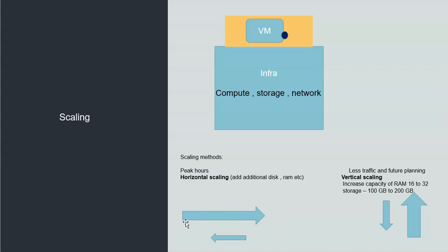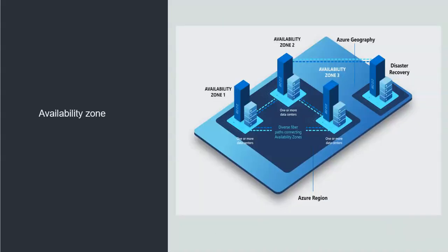Horizontal scaling happens when we don't want to reset or reboot the machine and want to improve performance on the running condition. Vertical scaling is when there are not many users and we plan to improve performance for the future — for example, upgrading from 16 GB RAM to 32 GB or 64 GB. When we increase the RAM and are ready to reboot the system, that is called vertical scaling.